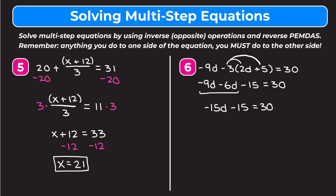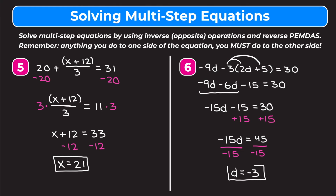We want to get rid of the 15 being subtracted before the negative 15 being multiplied, so we add 15 to both sides. On the left we're left with negative 15d. On the right 30 plus 15 gives us 45. Our last step is to divide both sides by negative 15. The negative 15s cancel, leaving d. On the right 45 divided by negative 15 is negative 3. So d equals negative 3.